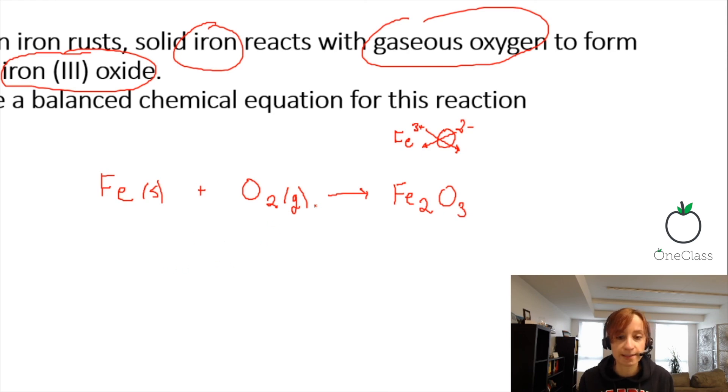So now in balancing the chemical equation, it is easier to balance out all the other elements other than oxygen or hydrogen first. So if we're going to balance out iron, we have 2 iron on the product, 1 iron on the reactants, so we're just going to multiply that by 2.